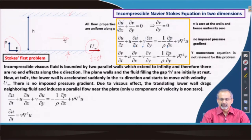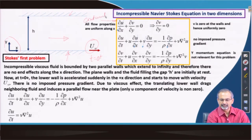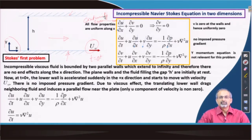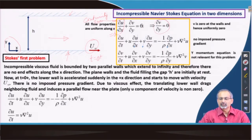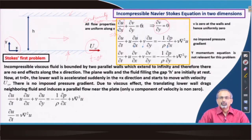Looking at the governing PDEs, we start with the continuity equation. Since the two walls stretch infinitely in the x-direction and remain parallel, all flow properties remain uniform along x. Therefore the x-derivative goes to 0, and as a consequence v cannot change along the y-direction. Since u and v are both 0 next to the walls, v is uniformly 0 everywhere in the field.